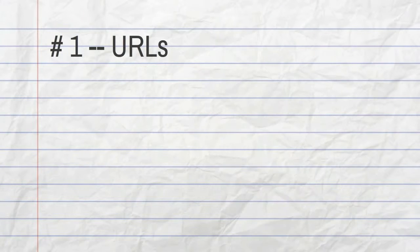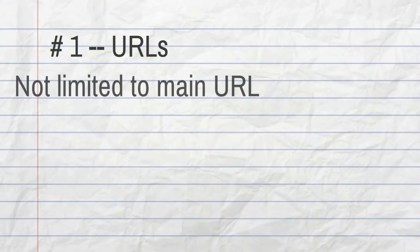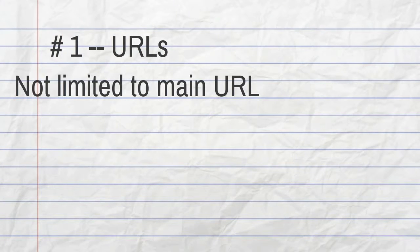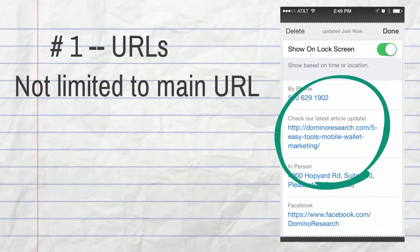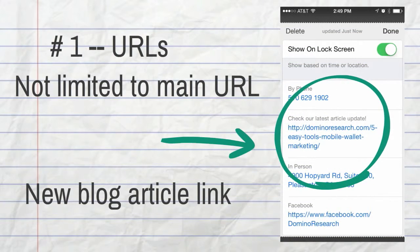Number one on my list: website URLs. Don't feel like you're limited to your main URL. I often point these links to new articles or how-to videos. The embedded videos launch right from the back of the card.